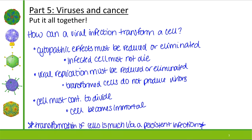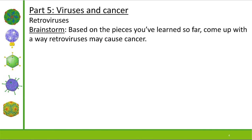Now that we have the pieces of how a viral infection can transform a cell, let's move to the oncogenesis part. We're going to talk first about retroviruses, and then we'll talk about DNA viruses.